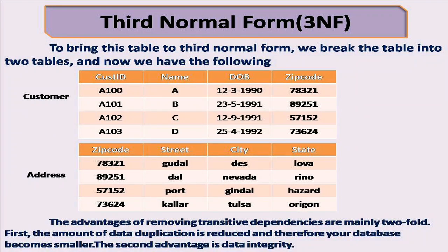To bring this table into third normal form, we break the table into two tables. Now we have a Customer table and an Address table. The zip code is used to link them. In the second table, non-primary attributes street, city, and state fully depend on zip code. In the first table, customer ID determines zip code, removing the transitive dependency.